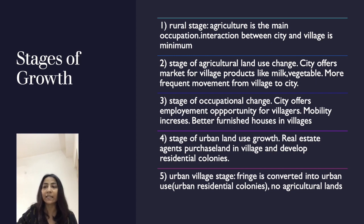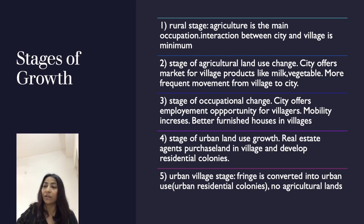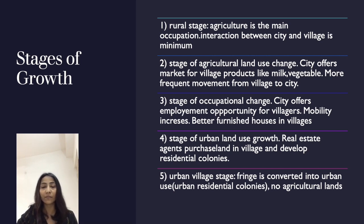Second is the agricultural land use change stage. In this stage, agricultural land use starts changing. The city offers a market for village products like milk and vegetables, and because of this there is frequent movement from the village to the city.